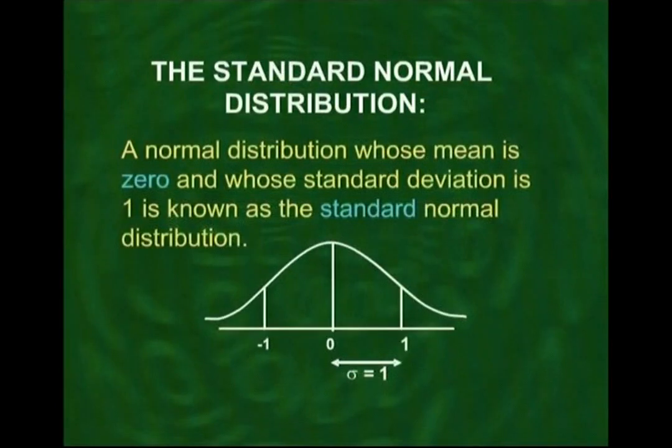Having discussed the main properties of the normal distribution, I would now like to draw your attention to the standard normal distribution. A normal distribution whose mean is 0 and whose standard deviation is 1 is called the standard normal distribution. This is a simple concept: mu and sigma are the two parameters of the normal distribution, and when we set mu = 0 and sigma = 1, the resulting distribution is the standard normal distribution.